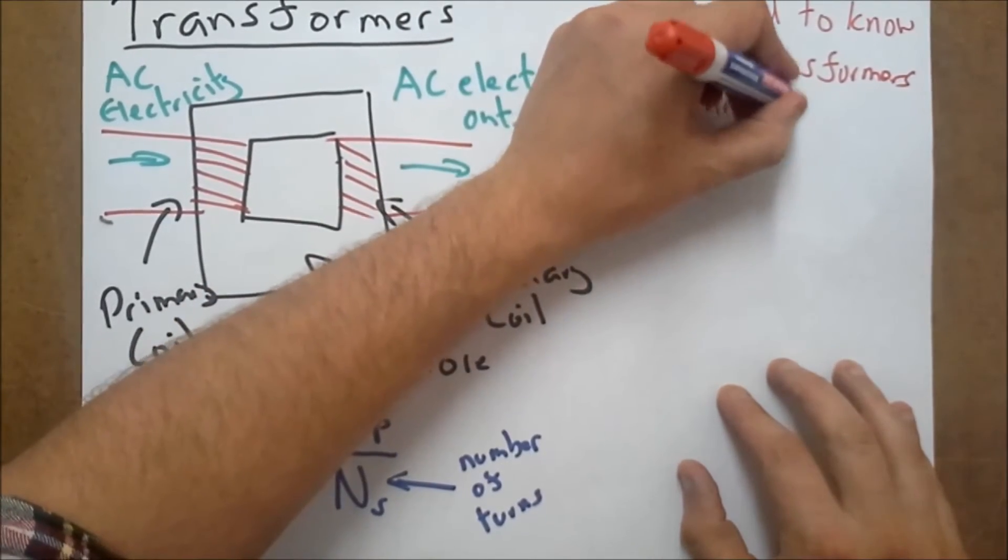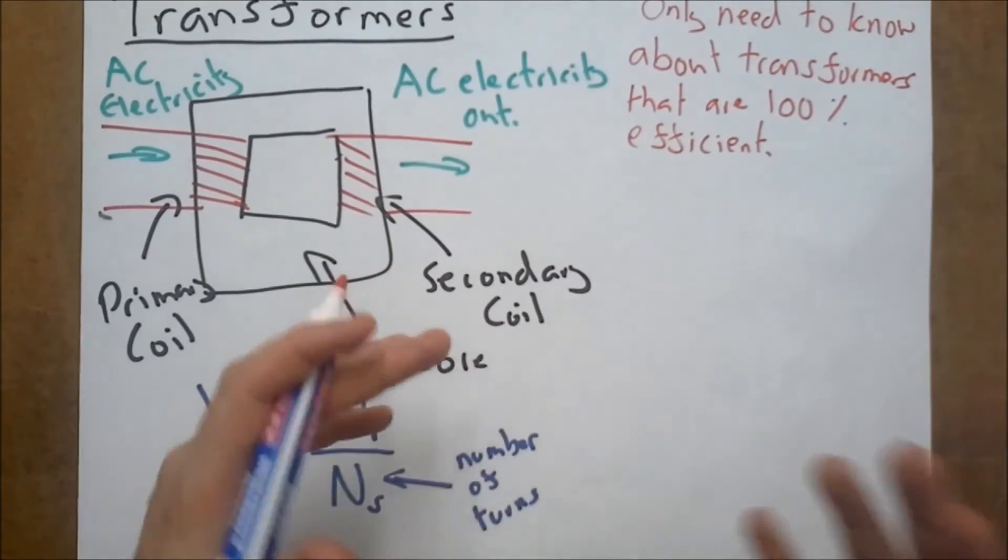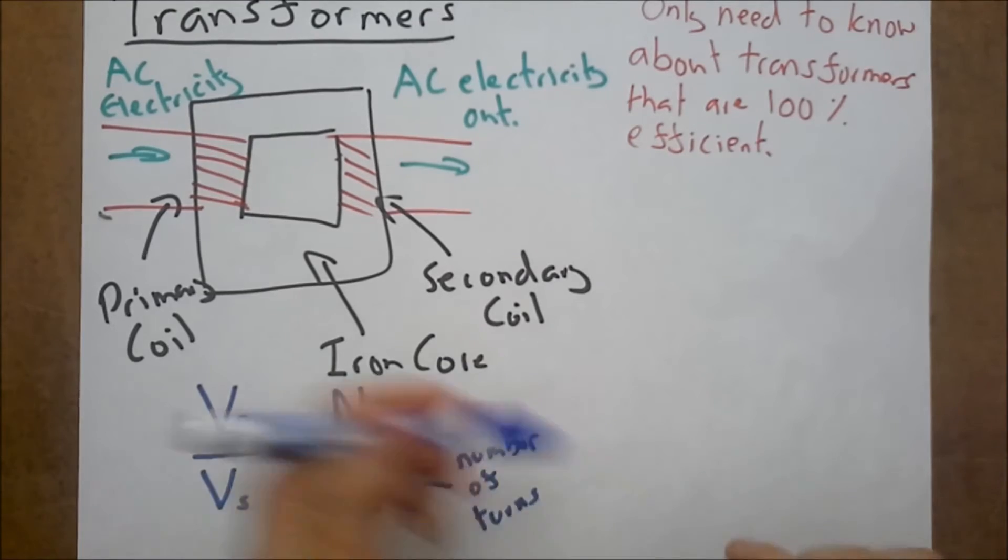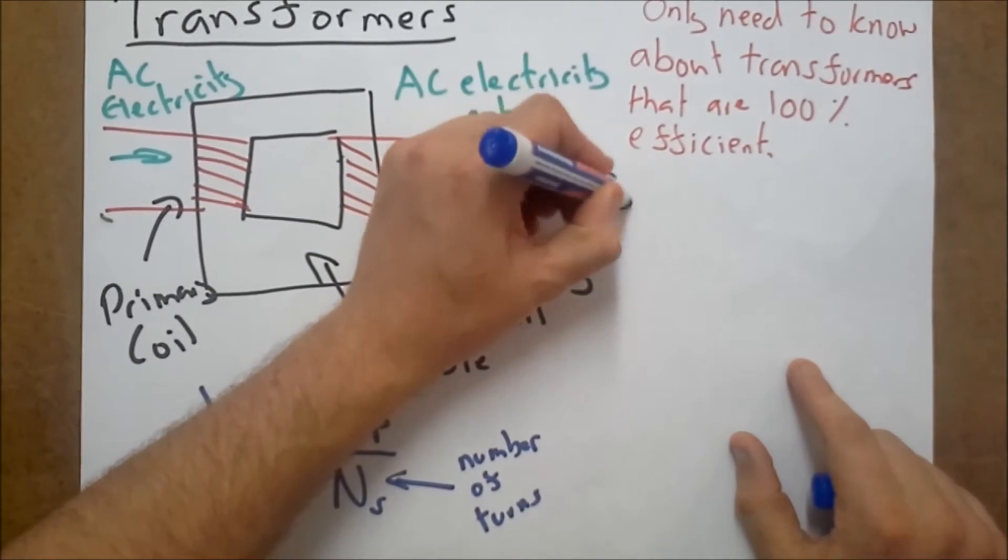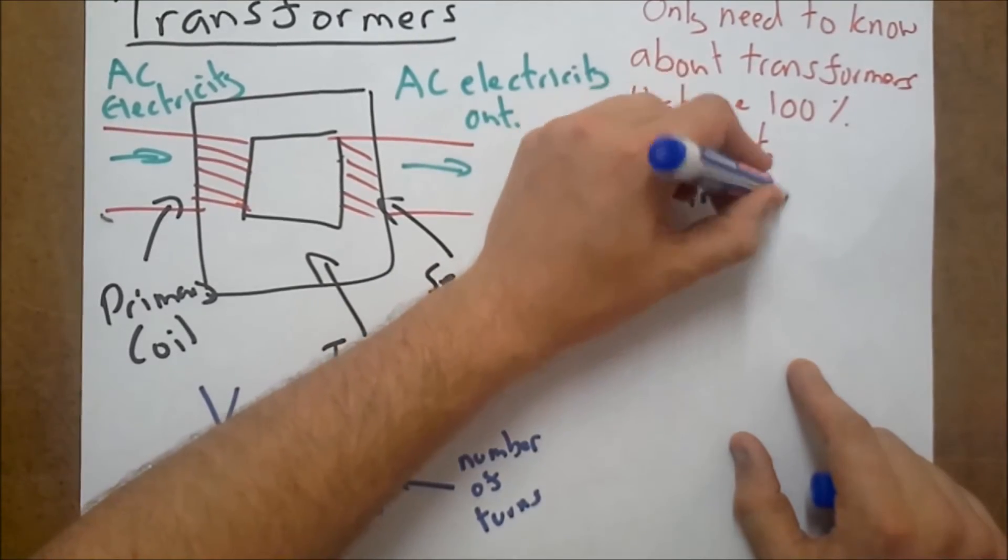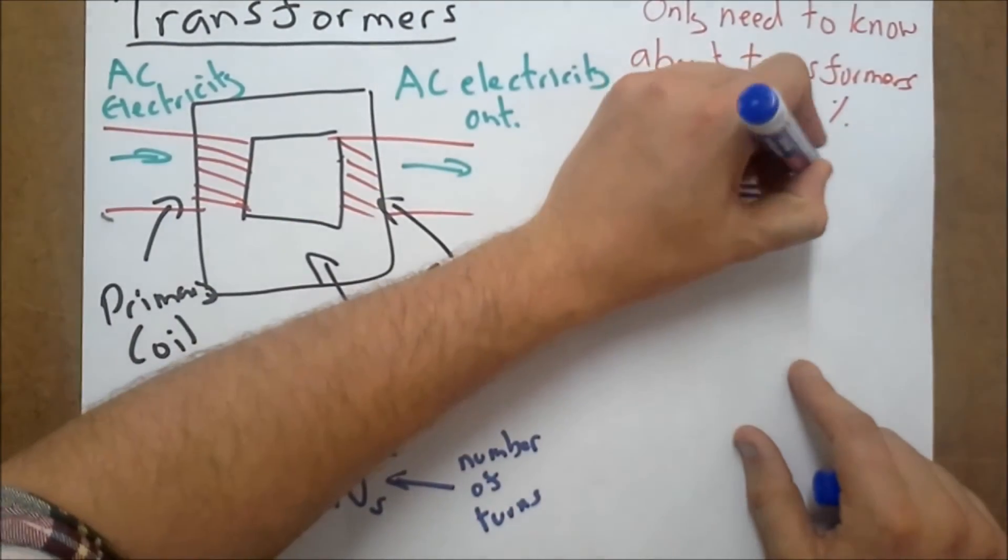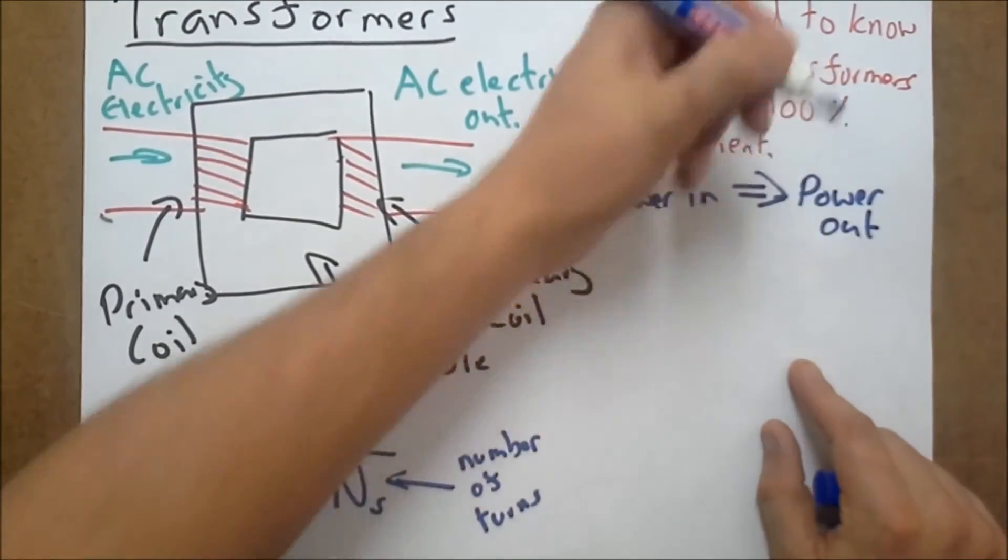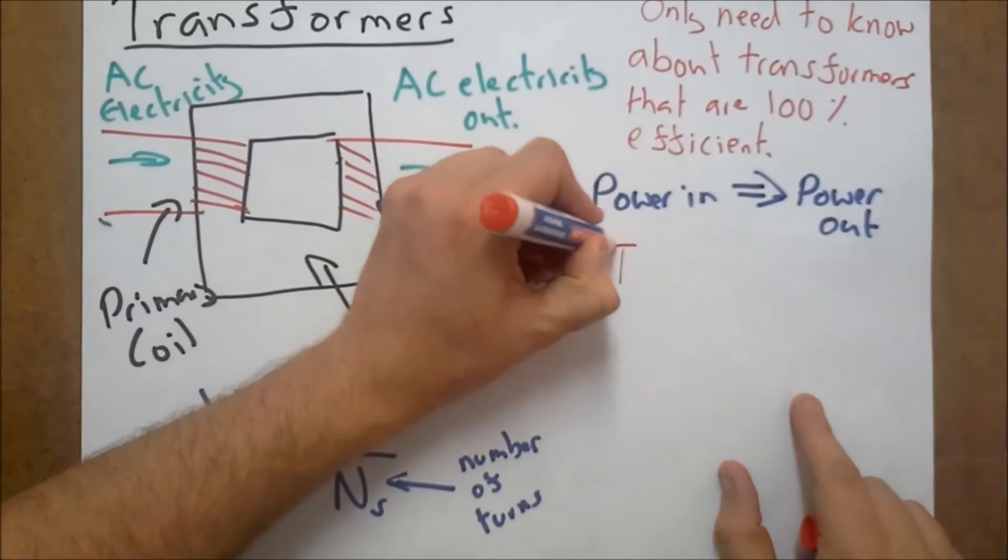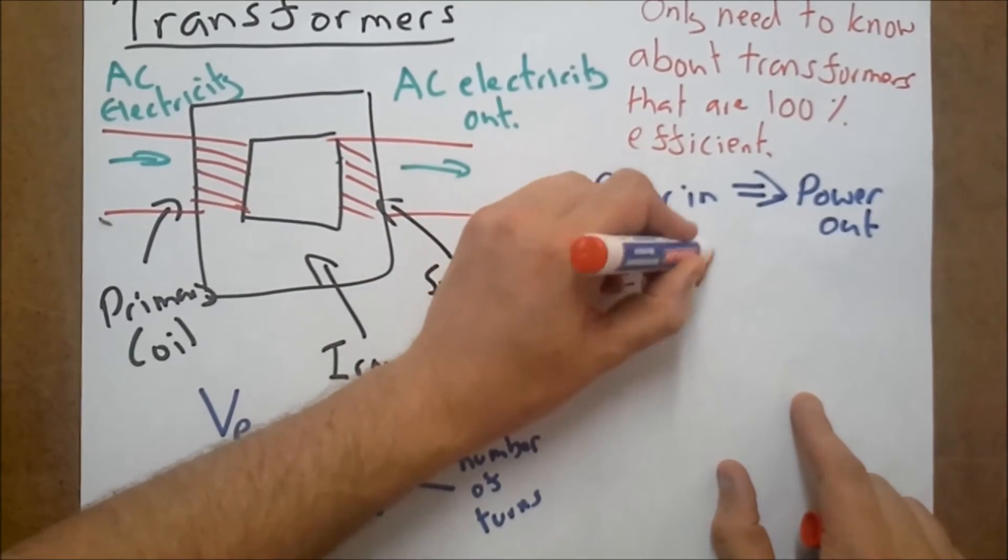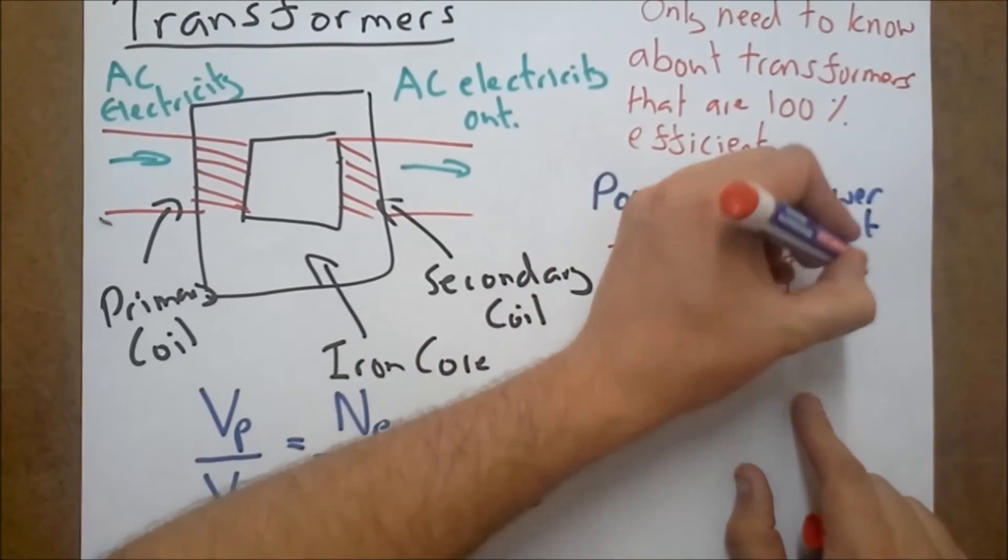Now what does that mean that they're a hundred percent efficient? Well it's all to do with the power going in compared with the power going out. The power going in, all the electrical energy that's going into my transformer all turns back into electrical energy. Now how do you work out power in terms of electricity? Well it's the current going in times by the voltage going in which is going to equal to the current going out times by the voltage going out.